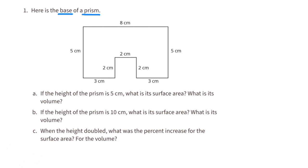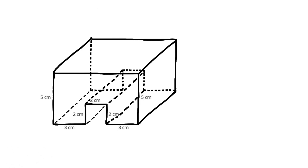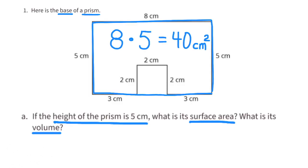Here is the base of a prism. Part A: If the height of the prism is 5 centimeters, what is its surface area? What is its volume? Here's a three-dimensional model of what the prism might look like with a height of 5 centimeters. To find the surface area of this base, you'd multiply 8 times 5, which would get you 40 centimeters squared.